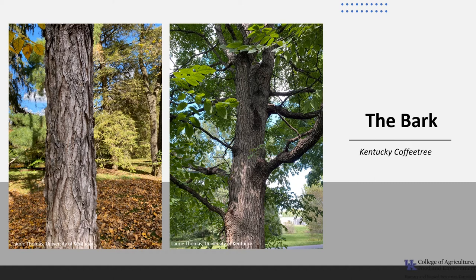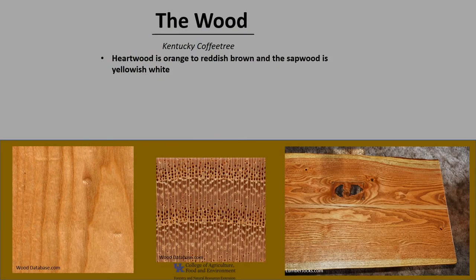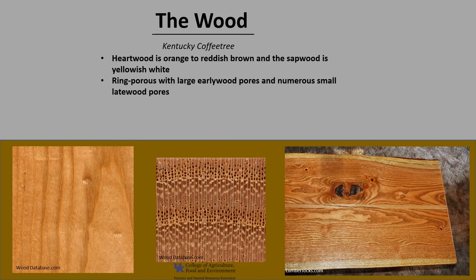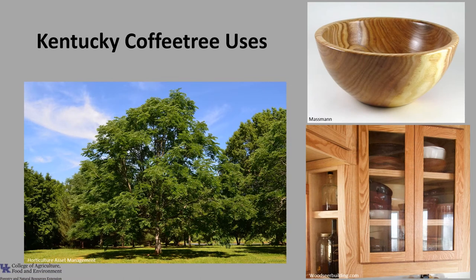The bark of Kentucky coffee tree is tannish to grayish brown, scaly and develops fissures with scaly ridges. The heartwood is orangish to reddish brown and the sapwood is yellowish to white. It is a ring porous species with large early wood pores formed in the spring and numerous small late wood pores formed in late summer into the fall. It is reported to be moderately durable to durable in decay resistance. The wood of Kentucky coffee tree, along with black locust and honey locust, is fluorescent when viewed under black light. Kentucky coffee tree wood tends to be bright, uniform yellow or green, and is used for cabinetry, fence posts, as a utility wood, and for small turned and carved pieces.